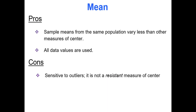Some pros about the mean: sample means from the same population vary less than other measures of center, and all data values are used. One con is that the mean is very sensitive to outliers — if you have a really big or really small value in your data set, it will significantly affect the mean. This means it is not a resistant measure of center.